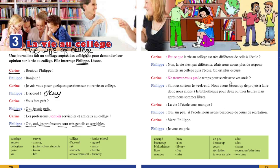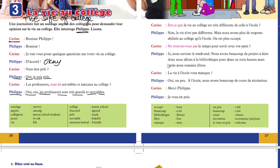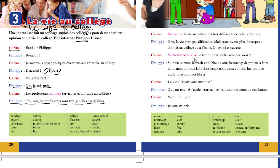Karine says, Tu trouves du temps pour sortir avec tes amis? Do you get time to spend with your friends? Philippe says, Oui, nous sortons le weekend. Nous avons beaucoup de projets à faire. Nous allons à la bibliothèque pour deux à trois heures. That means we meet on weekends. We have a lot of projects given. So we go to bibliothèque. Bibliothèque is library. For two to three hours. After that, we are free.